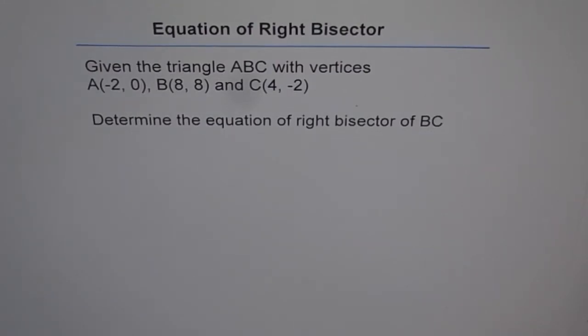Equation of right bisector. Given the triangle ABC with vertices A(-2,0), B(8,8) and C(4,-2). Determine the equation of right bisector of BC.